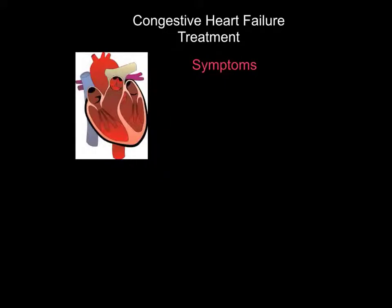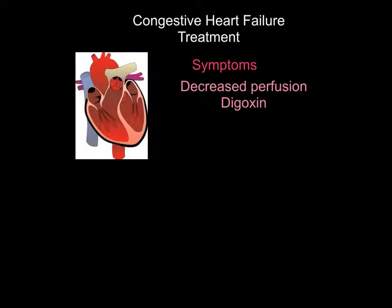In order to keep patients out of the hospital, it's important to treat the symptoms of congestive heart failure. These often include decreased perfusion — the fact that the heart isn't able to pump enough blood to the rest of the body. This decreased pumping can be treated with digoxin, which slows the heart down, allowing it to fill up properly and increases the contractility of the heart, allowing the ventricle to fill fully with blood and contract fully, squeezing blood out into the systemic circulation.